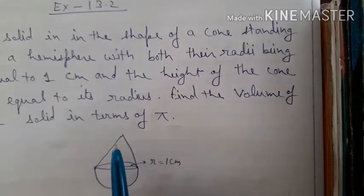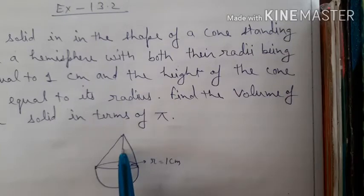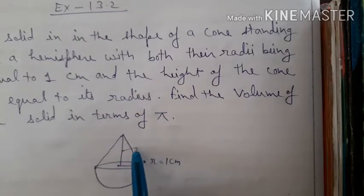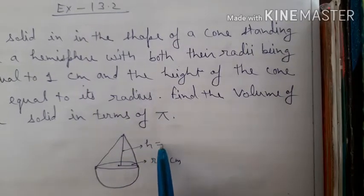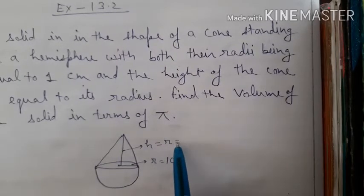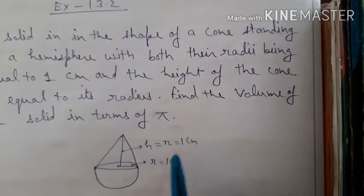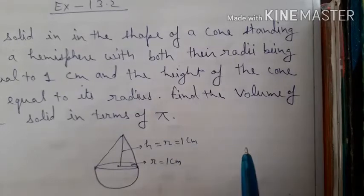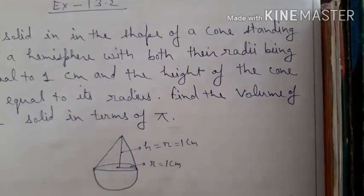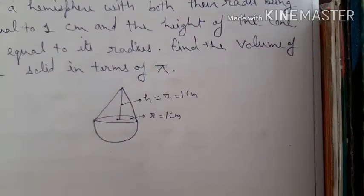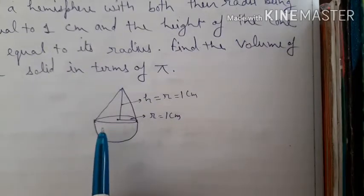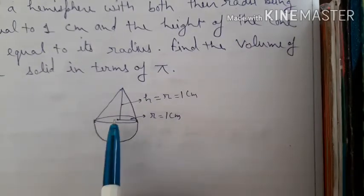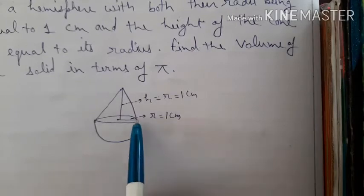The radius is equal to 1 centimeter. It is also given that the height of the cone equals the radius, which means h of cone is equal to 1 centimeter. Height of cone is also 1 centimeter. We have to find the volume of the solid. The volume of solid equals volume of hemisphere plus volume of cone.